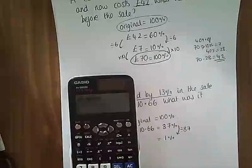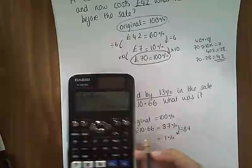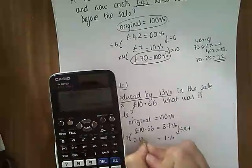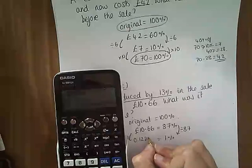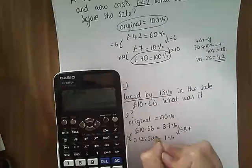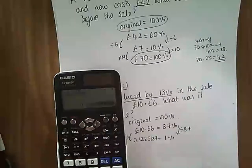£10.66 divided by 87, like we thought, going to be some hideous number. 0.122528. Now, try and keep as many decimals as you can to start with because that will make it easier.